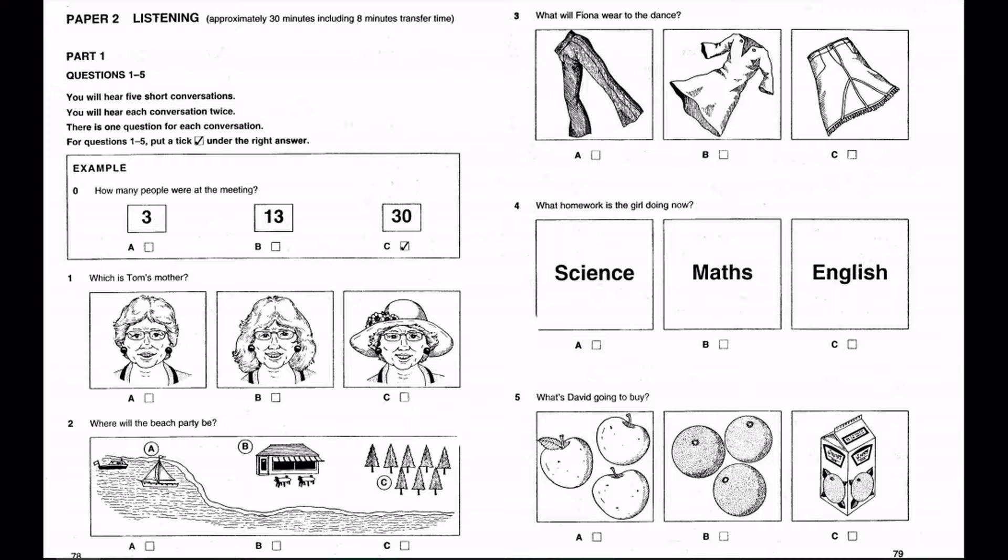How many people were at the meeting? Were there many people at the meeting? About 30. That's not many. No, but more than last time. The answer is 30. So there is a tick in box C. Now we are ready to start. Look at question one.